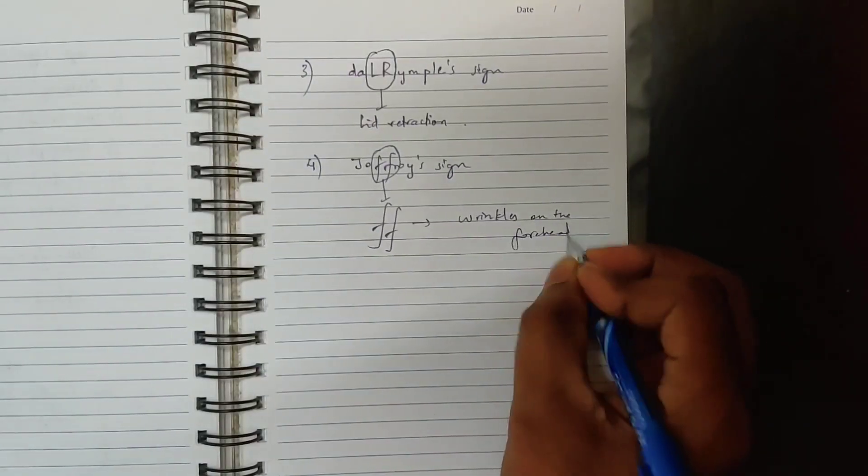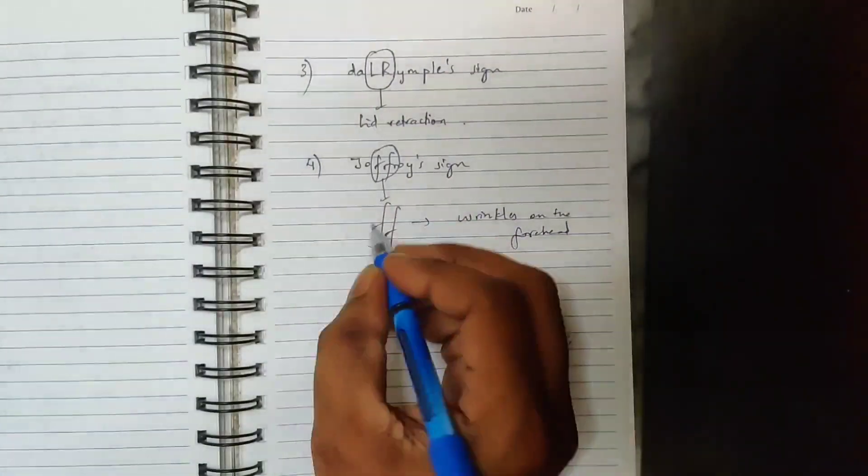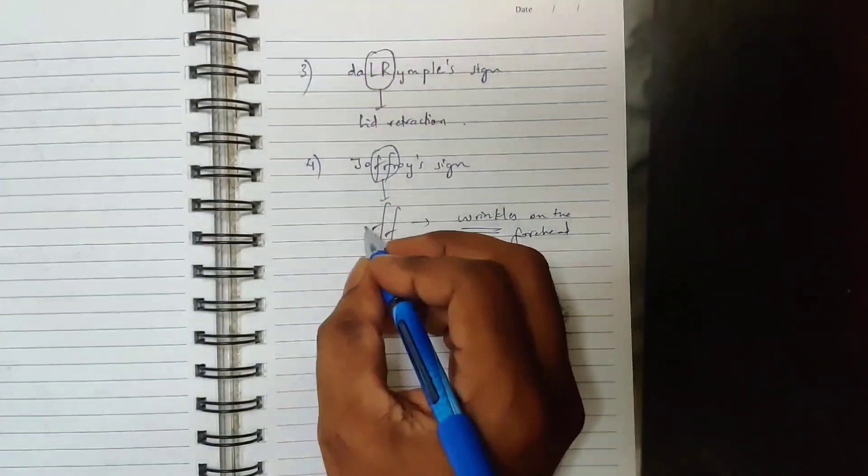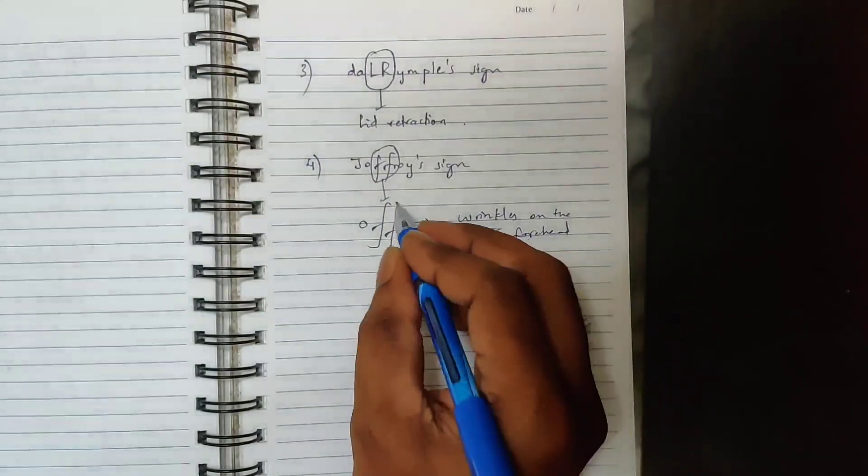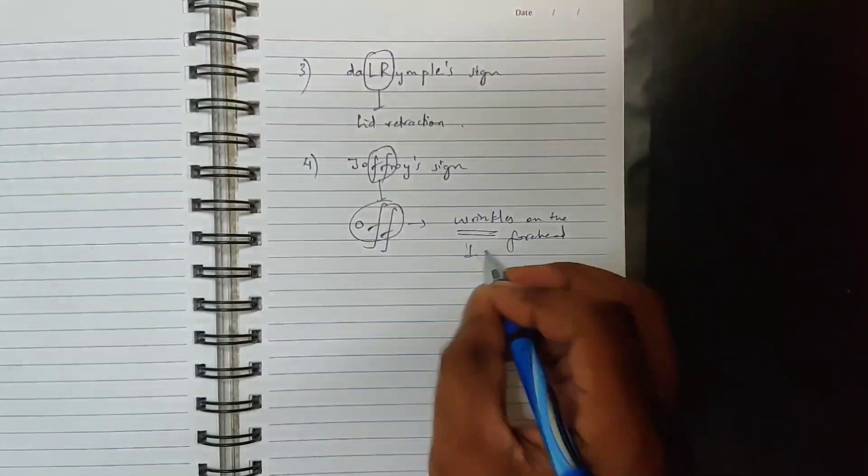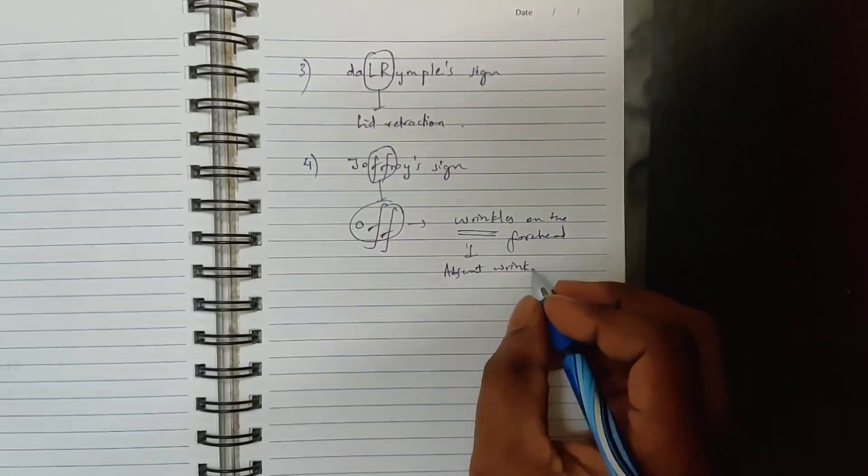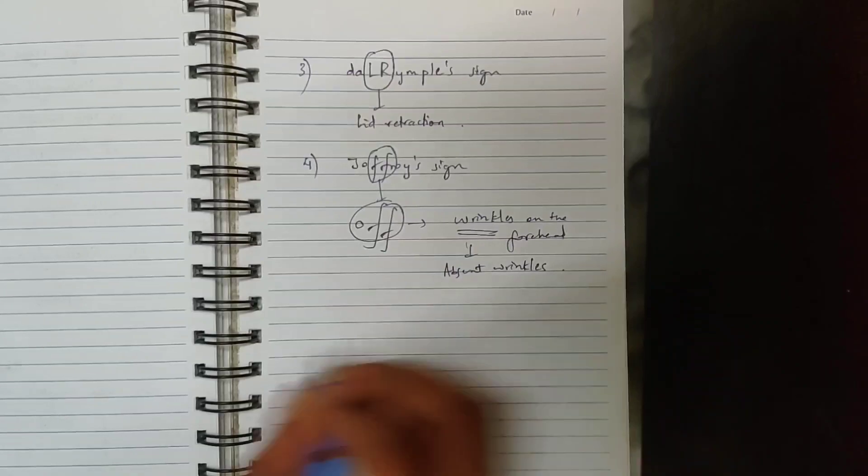Joffroy sign is absence of wrinkles on the forehead, like wrinkles are off. Patient is asked to look upwards, but there will be absence of wrinkles.